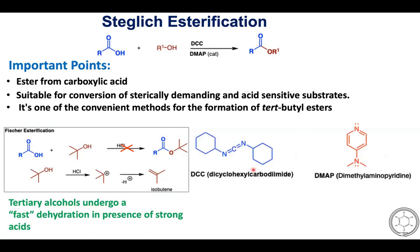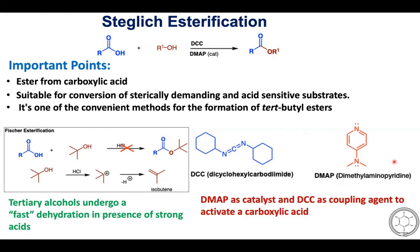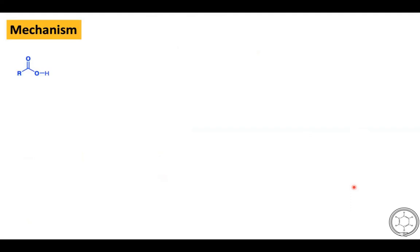In Steglitz esterification we need two chemicals: one is DCC, dicyclohexyl carbodiimide, and another is DMAP. Here DMAP acts as a catalyst in this reaction, while DCC acts as a coupling agent to activate the carboxylic acid.